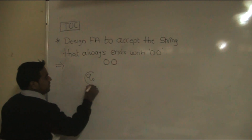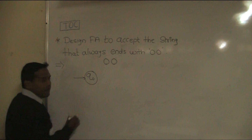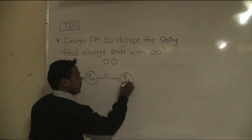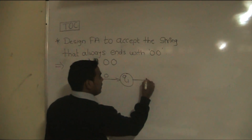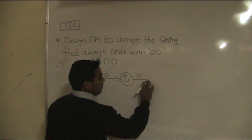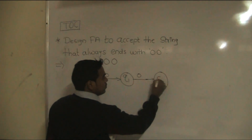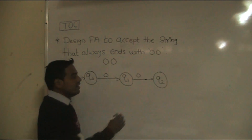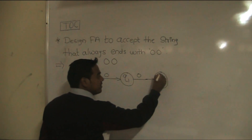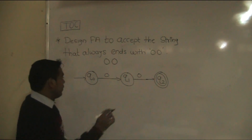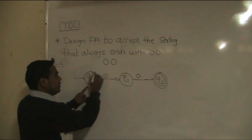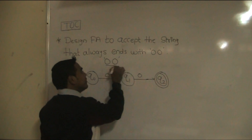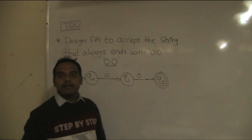We always start with q0 state. At q0 state, suppose 0 occurs — it goes to q1 state. At q1 state, suppose 0 occurs — it goes to q2 state. So we fulfill the requirement that the string ends with 00. We consider q2 as the final state. If you provide 00 as input: first 0 comes, it goes to q1; second 0 comes, it goes to q2. This string ends with 00, so it is accepted by finite automata.